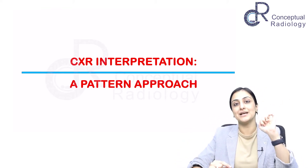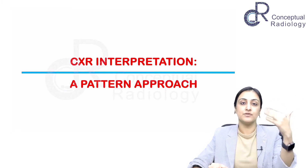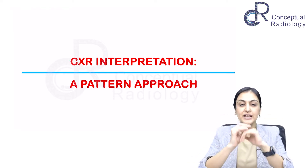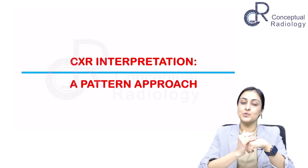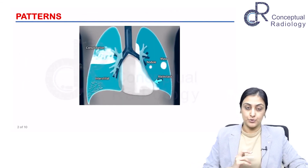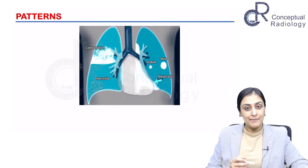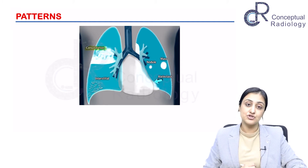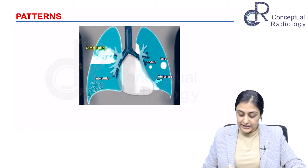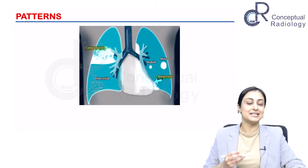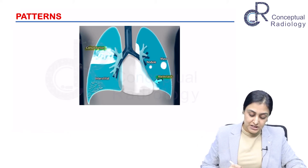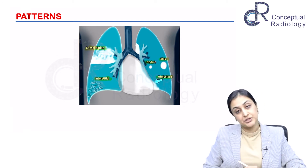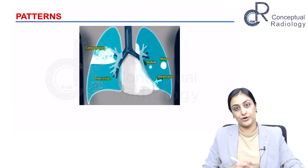Nodular opacities: if they are less than 3 cm, we call them nodules; more than 3 cm, we call them a mass. These are the three headings under which we are going to discuss the pattern based approach. If there is airway distension, we call it consolidation; if there is volume loss resulting in opacity, that is atelectasis; if it is a linear opacity, that is interstitial; and if it is a rounded lesion depending on size, it is either a nodule or a mass.